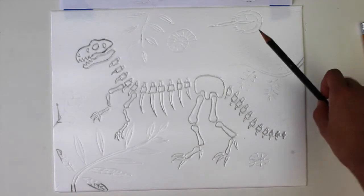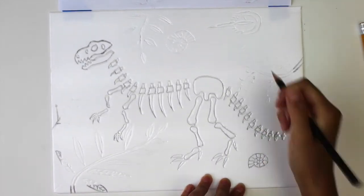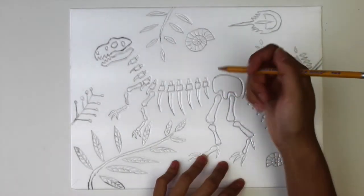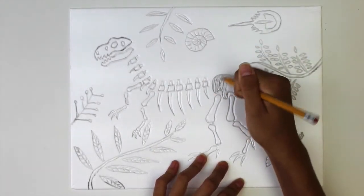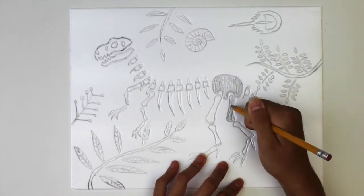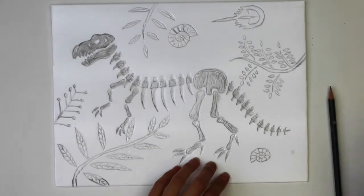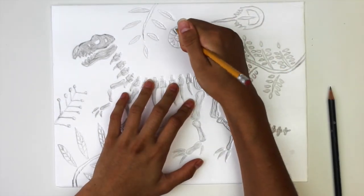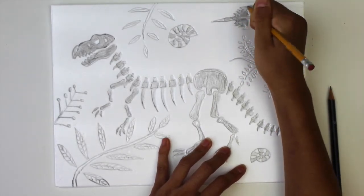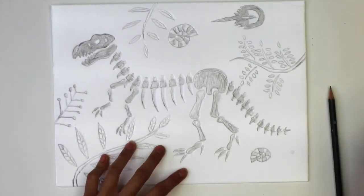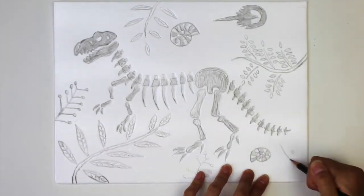Now use the sharp pencil for the background. Fill in the dinosaur fossils with the dull pencil. You can also etch some patterns onto the other fossils.